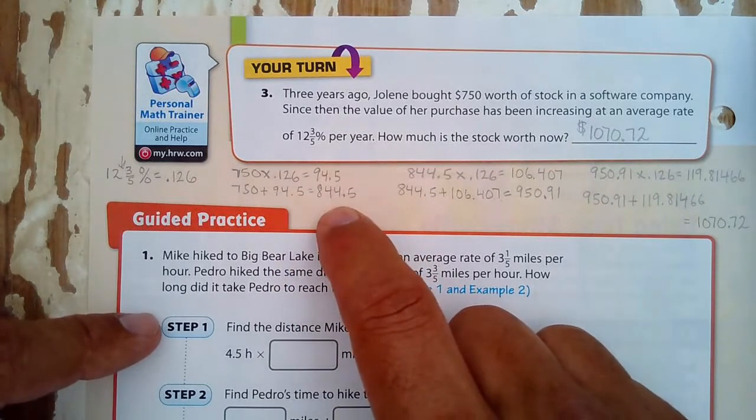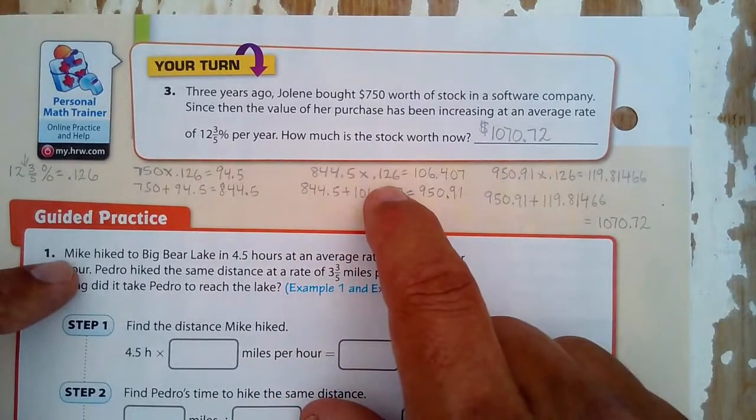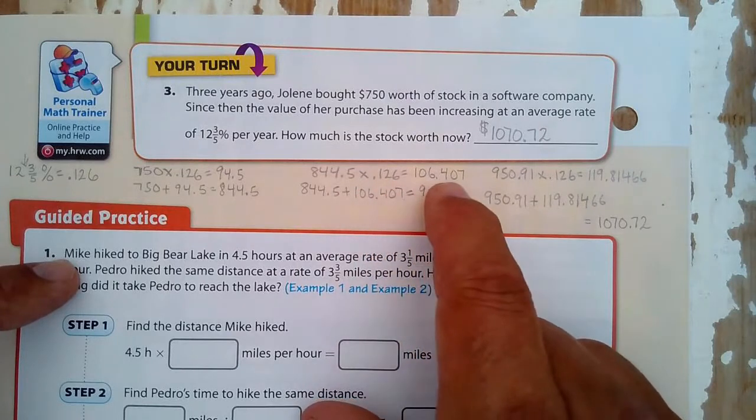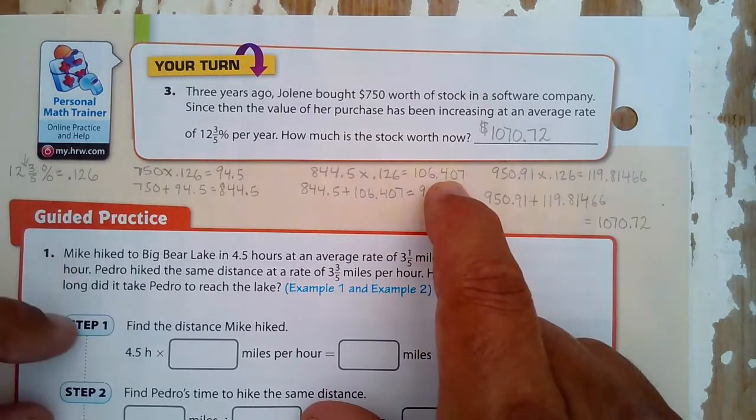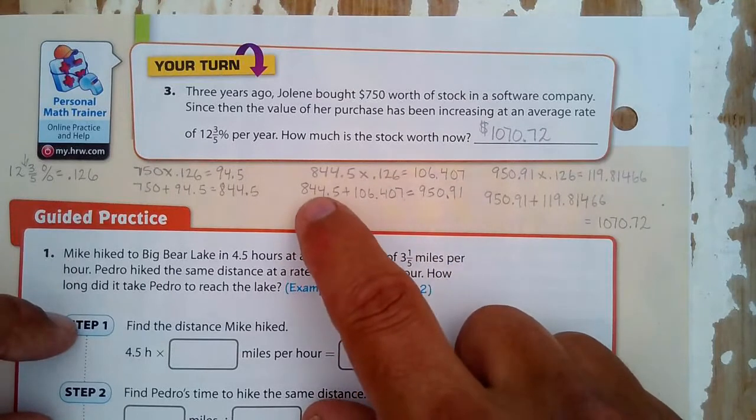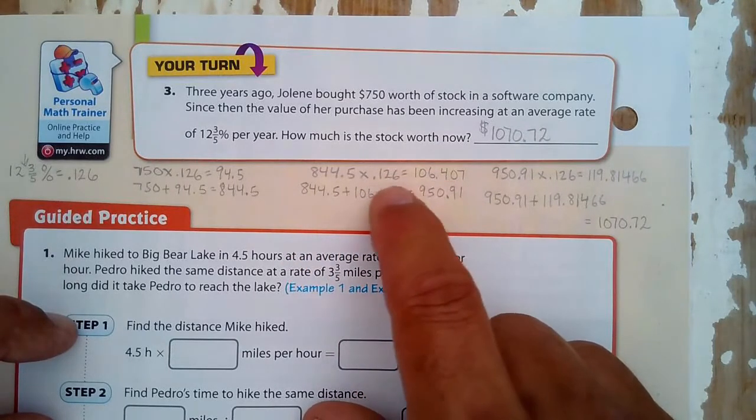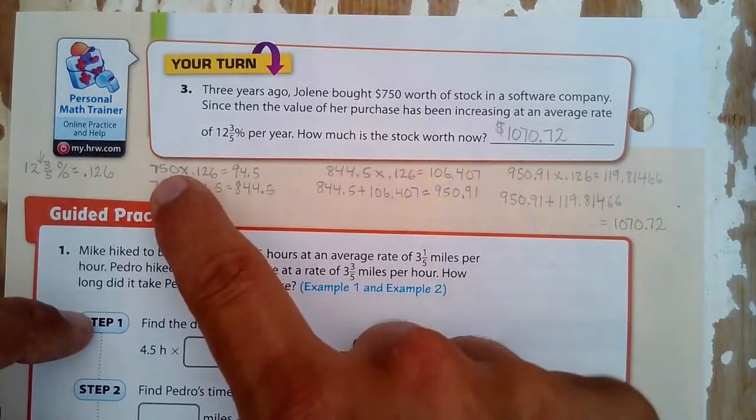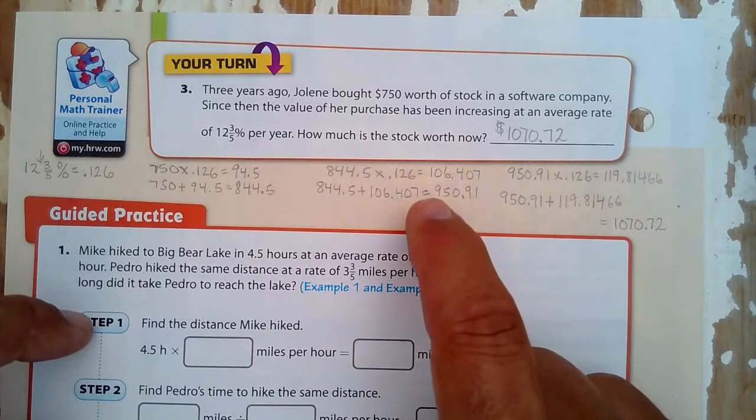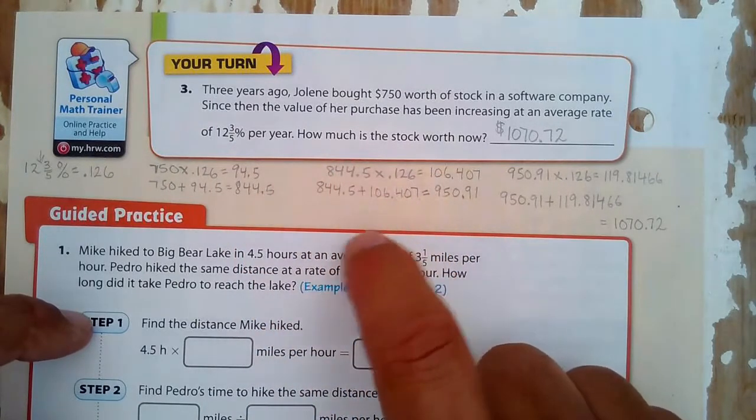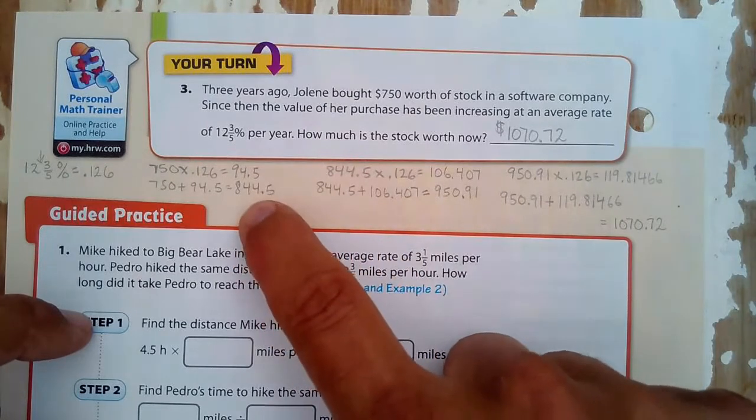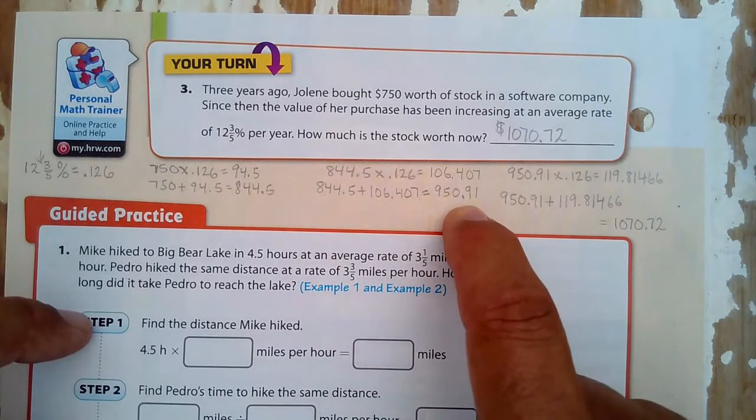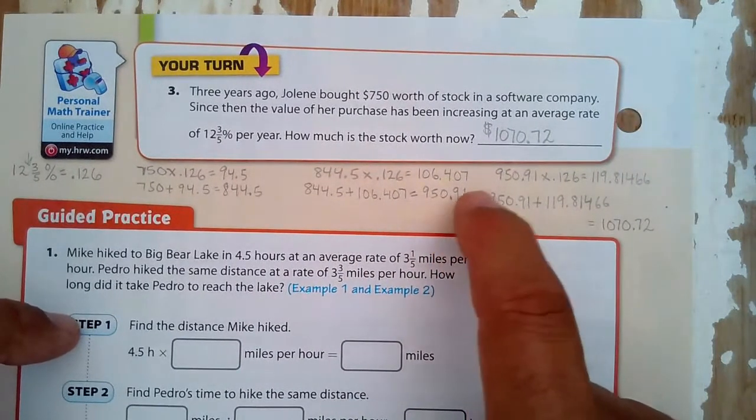Now I take that, and I do the same process. I have to take 12 and 3/5 percent, which is multiplying by 0.126, and I get this amount. It increased by this much money in the second year. And notice, it increased by more because I'm taking 12 and 3/5 percent of the new amount, not the original amount. So this is called compound interest. It's increasing by the new amounts.